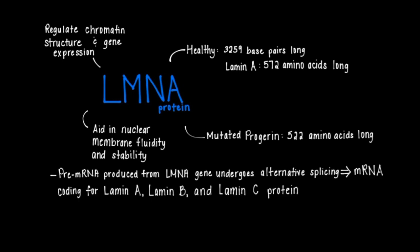The pre-mRNA produced from the LMNA gene undergoes alternative splicing, producing mRNAs coding for lamin A, lamin B, and lamin C proteins among others. The most common among vertebrates are lamin A and lamin B. The splice variant affected in Hutchinson-Guilford Progeria Syndrome is the lamin A splice variant.